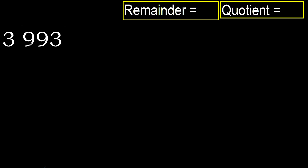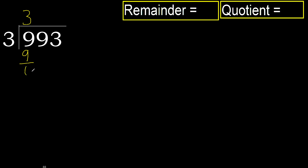993 divided by 3. 9 is not less, therefore with 9. 3 multiplied by which number is nearest to 9 but not greater? 3 multiplied by 4 is 12, is greater. Multiply by 3 — 9 is not greater. Subtract: 9 minus 9 equals 0.